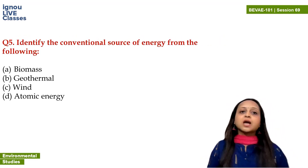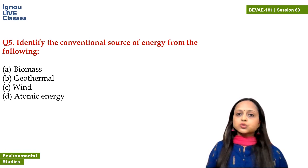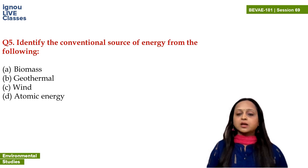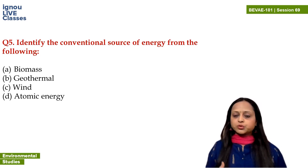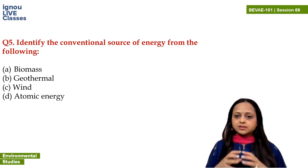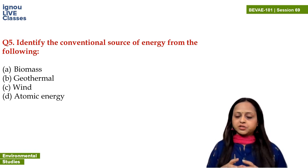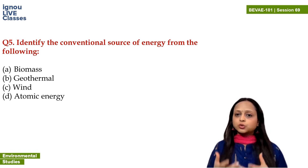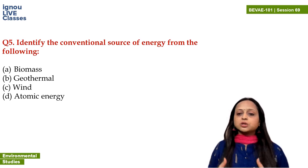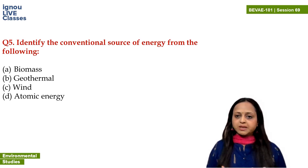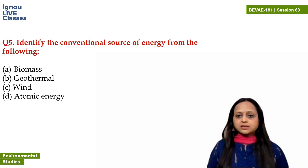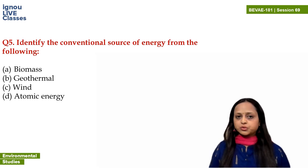Identify the conventional source of energy from the following. Conventional sources of energy are those where energy is in a fixed form — like coal, petrol, gas. These are also called non-renewable resources, meaning the resources which cannot be renewed once they are exhausted.